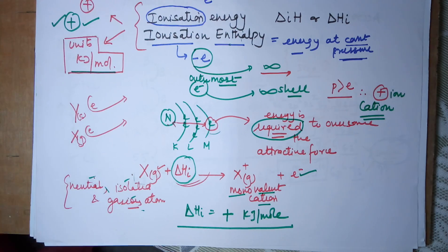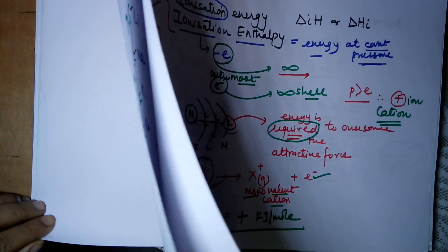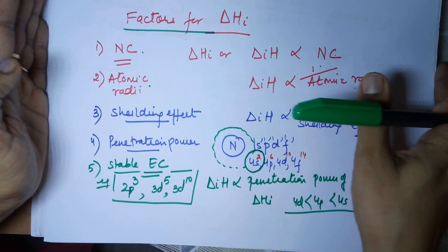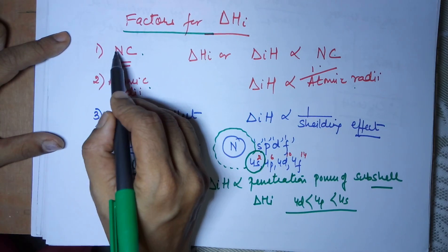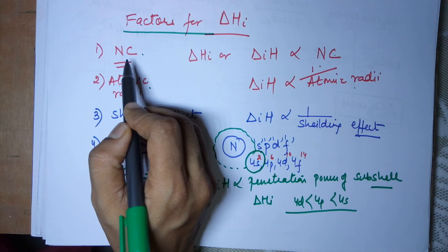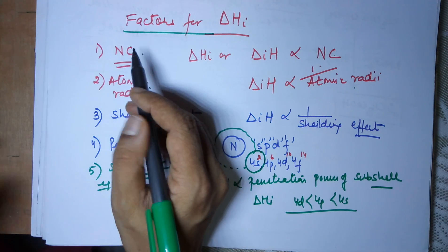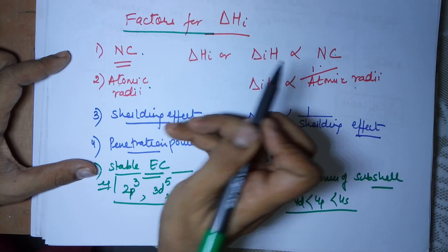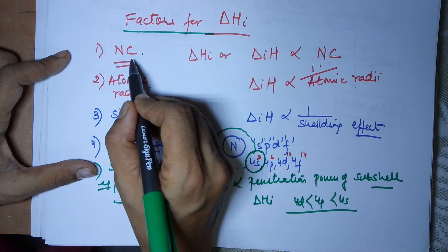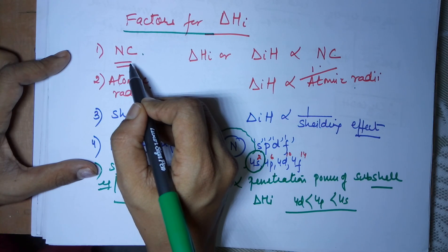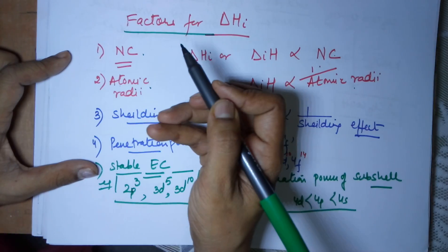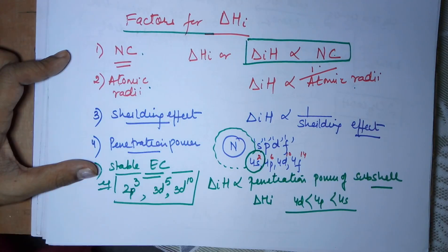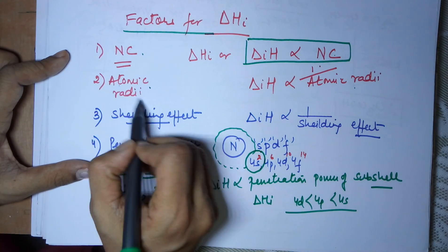Now let's look at the factors on which ionization energy depends. The first factor is nuclear charge (NC). If the nuclear charge is more, the outermost electron is tightly held. If it is tightly held, removal of the electron will require a large amount of energy. Hence ionization energy increases. So ionization energy is directly proportional to nuclear charge.